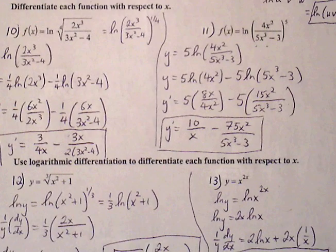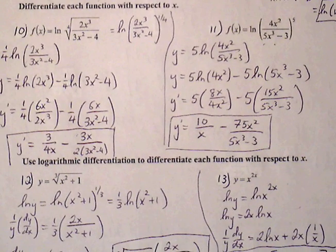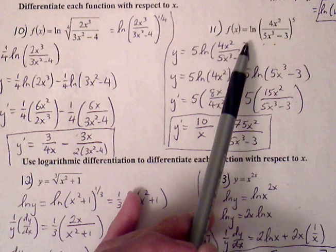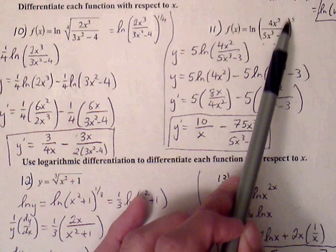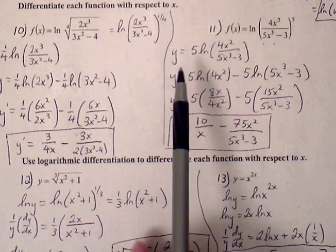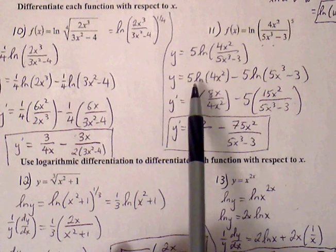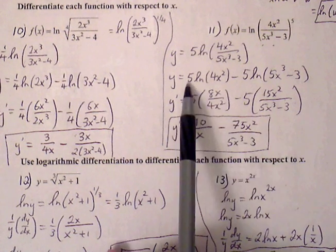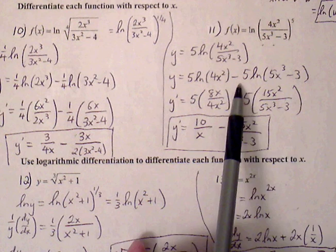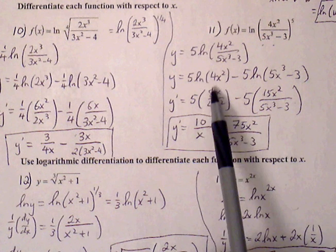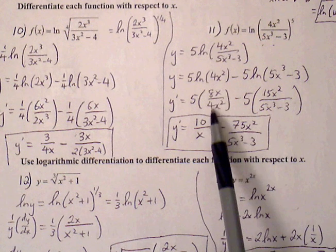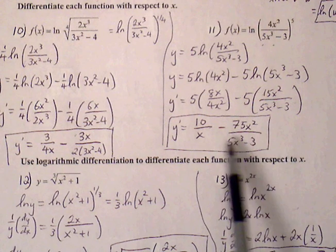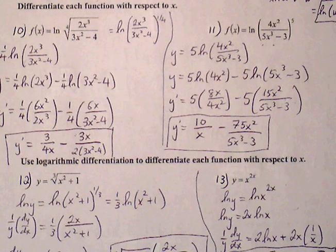Number eleven is much the same. We expand by bringing the 5 down in front, use the quotient property — ln(a) minus ln(b) — and distribute the 5 through. Then we apply u' over u to find the derivative, and clean up just a little bit more.